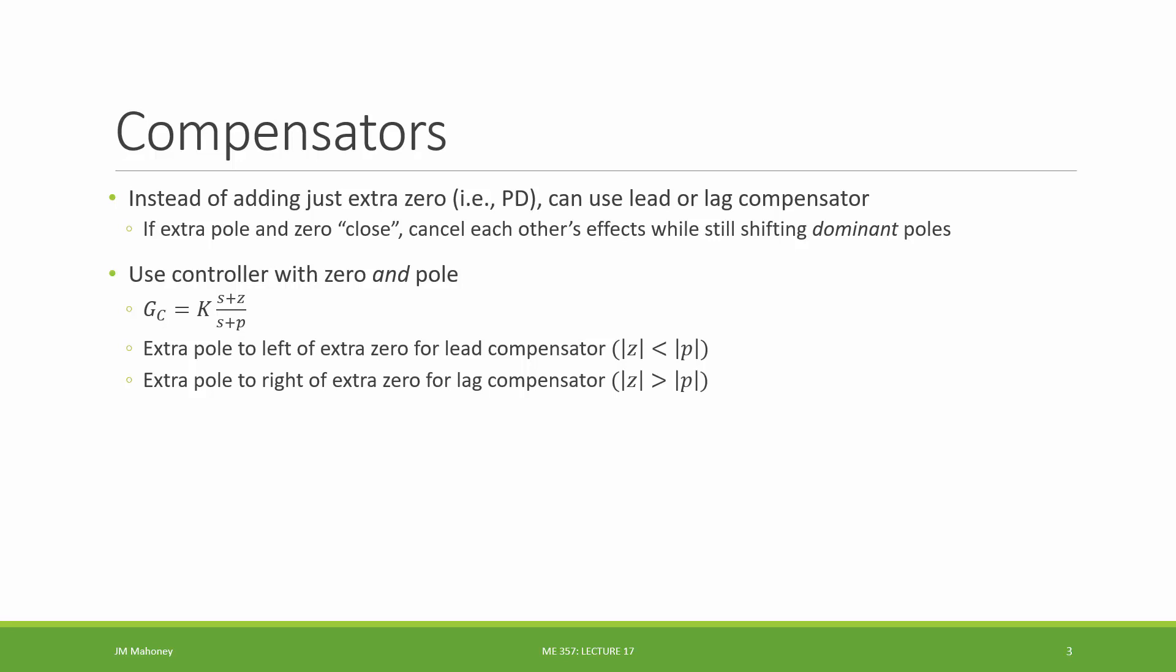Typically, our choices for the extra zero and the extra pole are going to be in the left half plane. So if the pole is to the left of the extra zero, that means that the pc value is greater than zc. We have a lead compensator. If the zero is to the left of the pole, then we have a lag compensator.